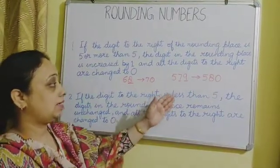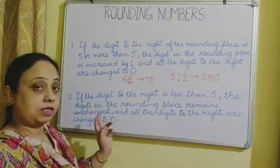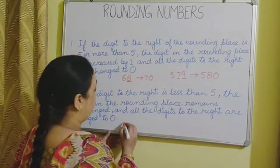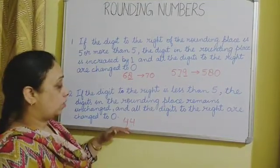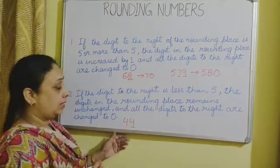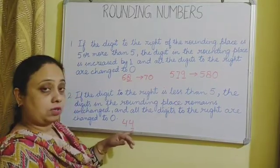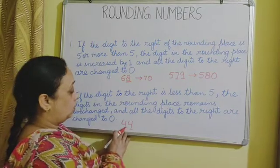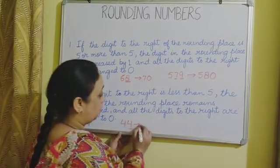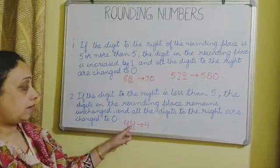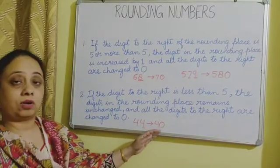If the digit to the right is less than 5, the digit in the rounding place remains unchanged and all digits to the right are changed to 0. If we have to round off 44 to nearest 10, we look to the right — the 1's place — and we have 4, which is less than 5. So the 10's place remains unchanged, and the digit to the right changes to 0. Therefore, 44 is rounded off to 40.